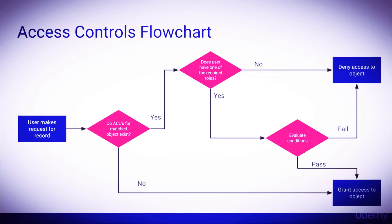Let's walk through the access control flowchart. It starts with a user making a request to view or edit a record. The first question is: do access controls for the matched object exist? If no, the user is granted access to the record. If yes, a second question is asked: does the user have one of the required roles within the rule? If no, it denies the user access. If yes, it asks a third and final question: do the conditions evaluate to true? If the conditions pass, it grants access to the object. If the conditions fail, it denies the user access.